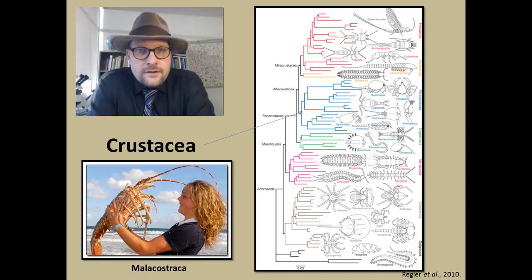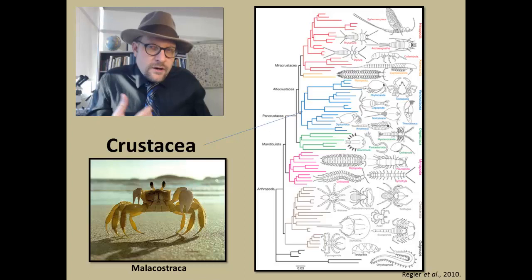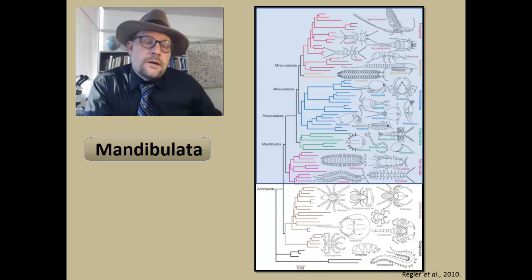And then the last group is the group you are probably most familiar with—these are the Malacostraca. These include the lobsters, they also include the crabs, and a lot of shrimp are in this group as well. So those are the Crustacea, and those are now regarded as the sister group of the Hexapoda, which is kind of interesting.